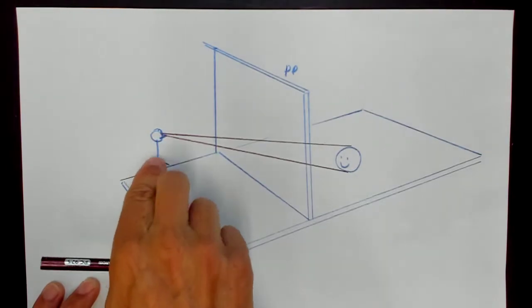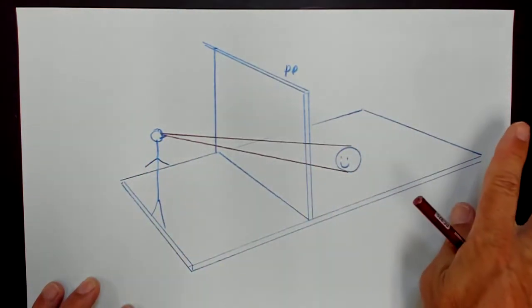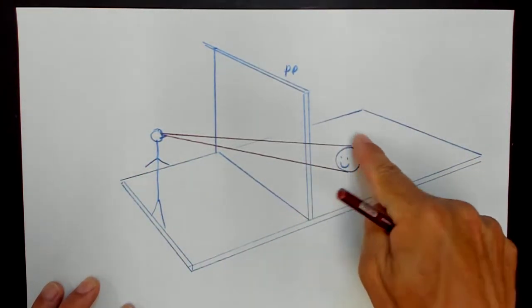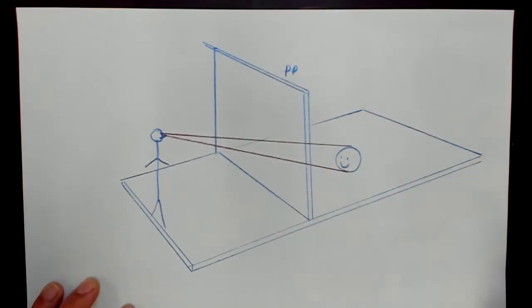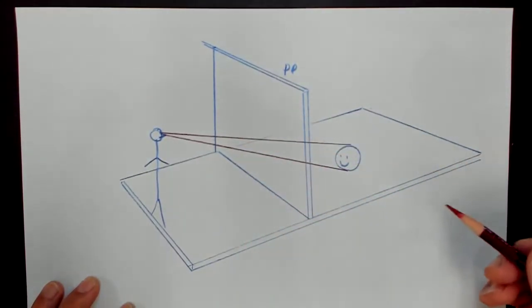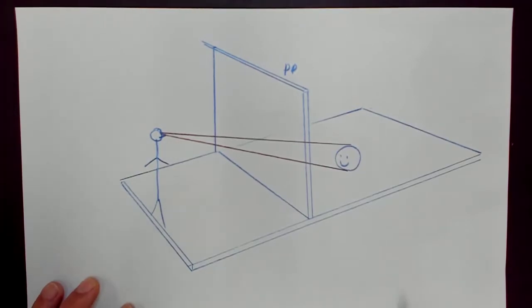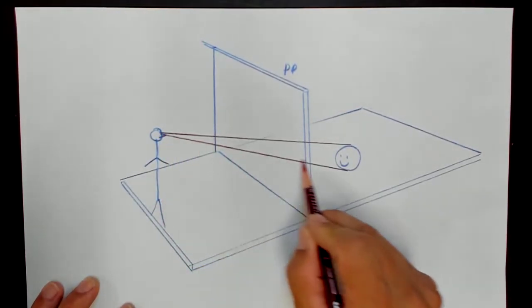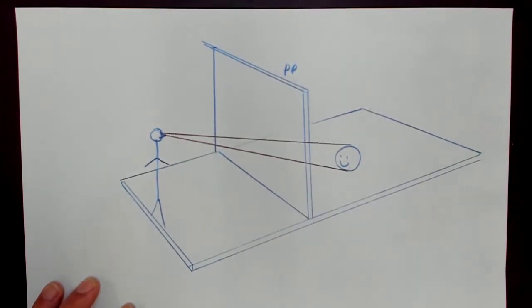They considered the eye projecting out, so even though we kind of reverse this around now, it looks the same. It's kind of the same idea whether this is projected out to the object or how it actually is.